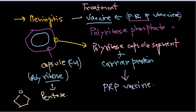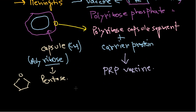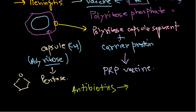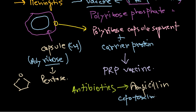If infection is already onset, we can use antibiotics for treatment. Among penicillins we can use ampicillin. Among cephalosporins we can use cefotaxime — a third-generation cephalosporin — or we can also use ceftriaxone.